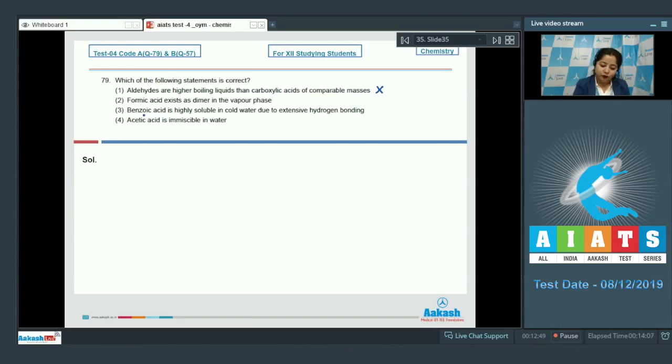Moving to next statement, formic acid exists as dimer in vapor phase. This is the correct statement. When I am drawing the dimer of formic acid, which is H-C double bond O-H-H-C-O-H double bond O. Because of hydrogen bonding, the dimer forms. Moving to next statement, which is benzoic acid is highly soluble in cold water due to extensive hydrogen bonding. This is an incorrect statement. Benzoic acid is nearly insoluble in cold water because of the larger size of its hydrophobic ring. Moving to last statement, which is acetic acid is immiscible in water.